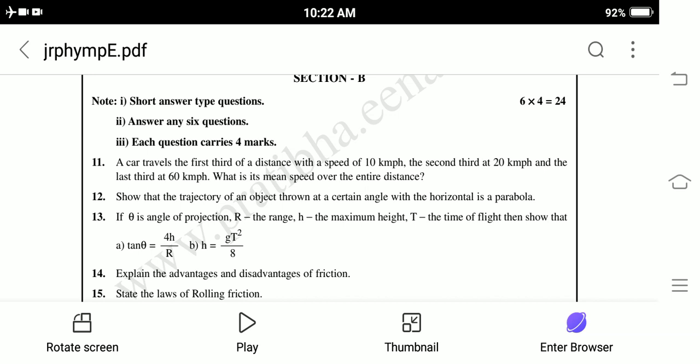Thirteenth question: If theta is the angle of projection, R is the range, H is the maximum height, T is the time of flight, then show that tan theta equals 4H by R, and H equals GT squared by 8. Fourteenth question: Explain the advantages and disadvantages of friction.